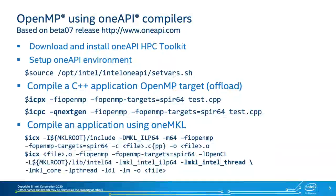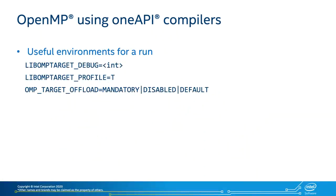There are three environment variables I found quite useful when getting started with OneAPI and GPUs. You can set the debug level to see how your program is executing, set profile to true to see how much compute time is spent in kernels versus host time and how much data is being exchanged, and you can set OMP_TARGET_OFFLOAD to DISABLED so that during design and development stages you can do most of the work on CPU.